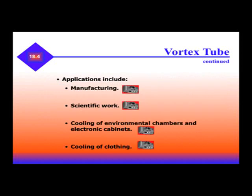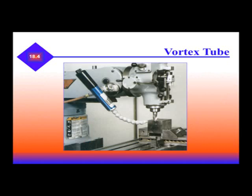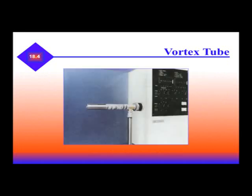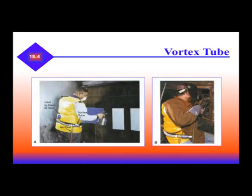Applications of the vortex tube include manufacturing, scientific work, cooling of environmental chambers and electronic cabinets, and cooling of clothing. This is an example of a vortex used in industrial applications — we are cooling a drill. Another vortex tube picture shows our inlet air that's filtered, a regulator, condensate with cold air, and hot air exhaust. Additional examples show a vortex tube in a scientific environment and a vortex tube in individual cooling.